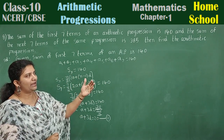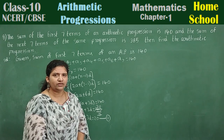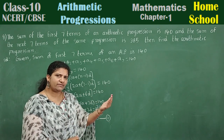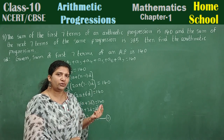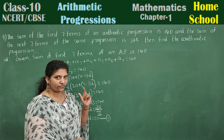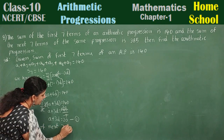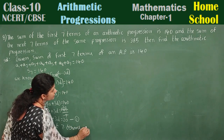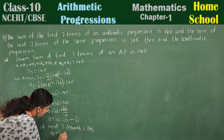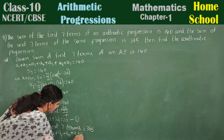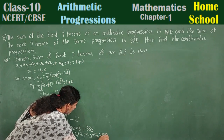Next point: the sum of the next 7 terms is 385. The next 7 terms means a8, a9, a10, a11, a12, a13, a14 — and their sum is equal to 385. So how do we write this using S notation? That is the tricky part.